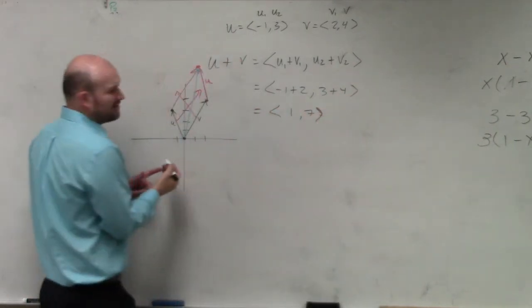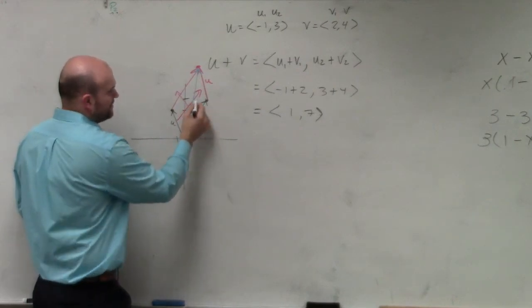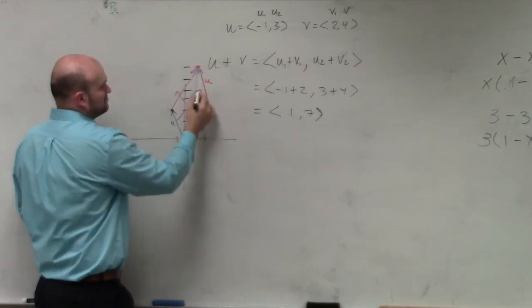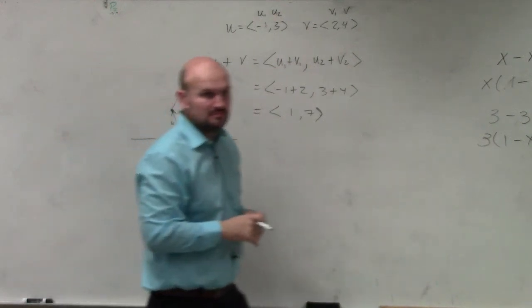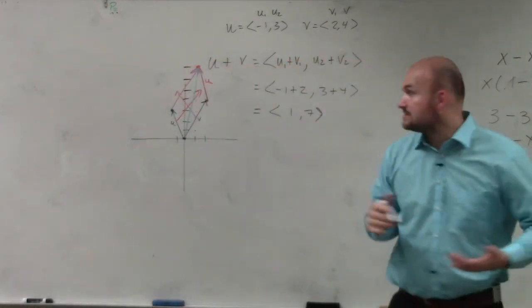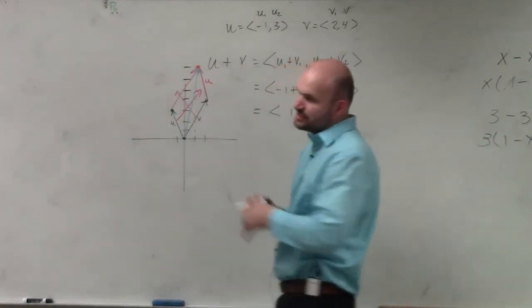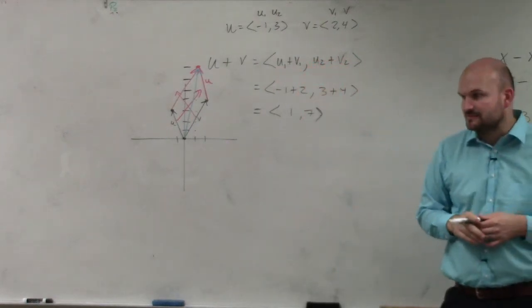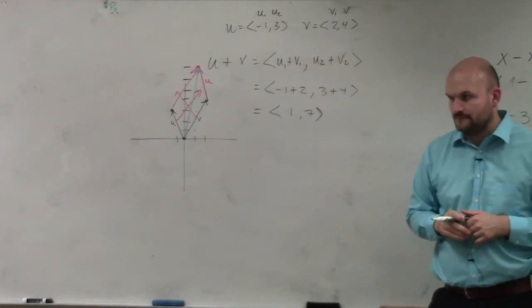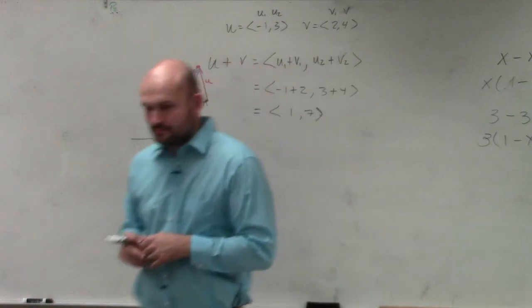Now, let's make sure. Does that kind of look like where we're at? Over 1, up 7. 1, 2, 3, 4, 5, 6, 7. It's pretty good, right? Everybody kind of see that? So this resultant vector, this blue vector, is 1 comma 7, all right? Now.